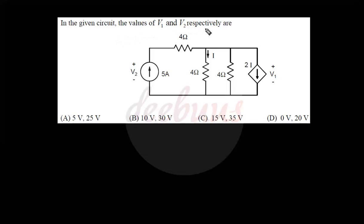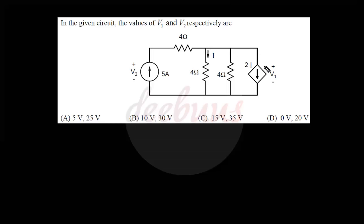Moving to the next question: find the values of V1 and V2. V1 is the voltage across the dependent source and V2 is the voltage across the current source. Writing the node equation with node voltage V1: V1/4 + V1/4 + 2i = 5, where 2i current is leaving the node and 5 A is entering.